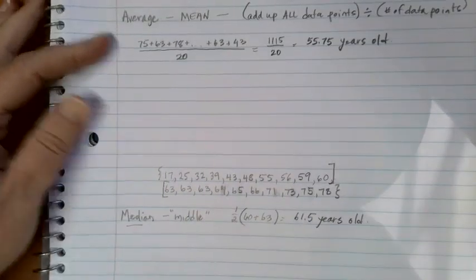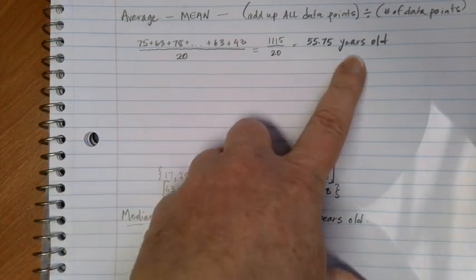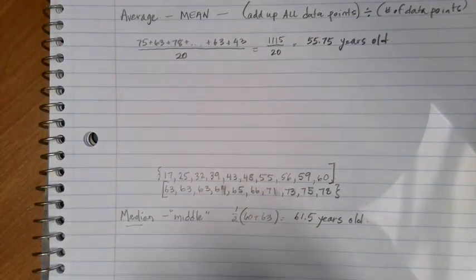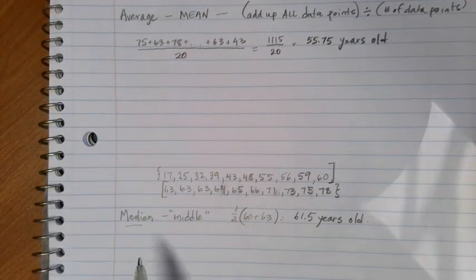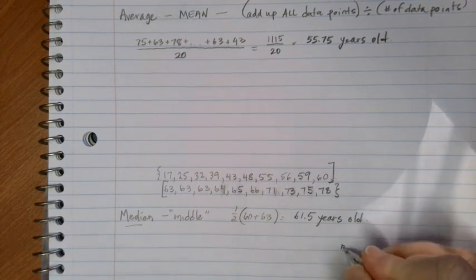Now remember from up here when we calculated the average or mean, we came up with 55.75 years old for that average age if we added everybody up and divided by 20. The median is that middle number which is 61.5. In this case, notice that our mean is less than our median.